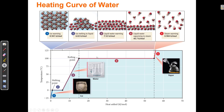We can calculate the amount of energy required for different amounts of water — we've already done this in chapter five when talking about energy. Segments one, three, and five of the curve use the equation Q = mcΔT, where heat equals mass times the heat capacity times the change in temperature.